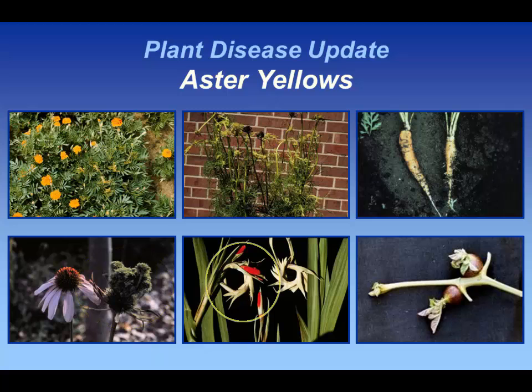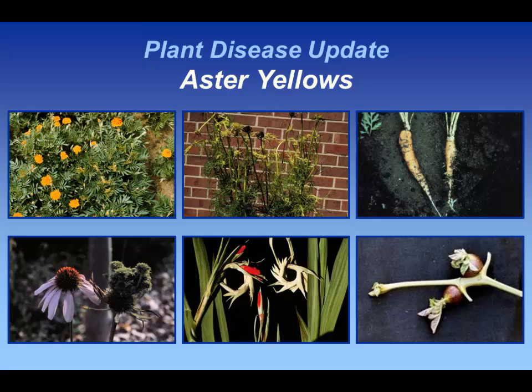This is also a vegetable pathogen. What you tend to see on carrot is a stunted root — this is a healthy one on the left, and one with the phytoplasma here — a stunted root with these little hairy roots that pop up on the surface, which is very typical. And then on potato, if you're growing potatoes, when you get it in that particular host, you start to see purpling foliage and production of aerial tubers — tubers on the branches rather than below ground.